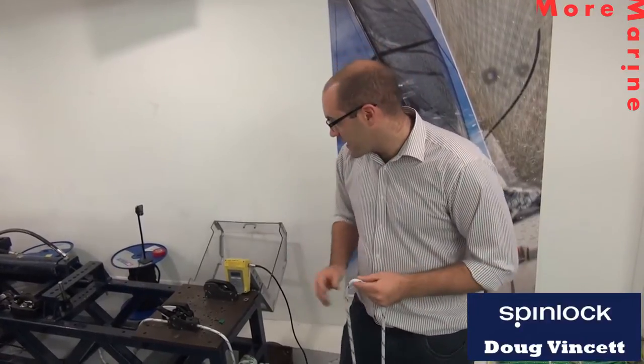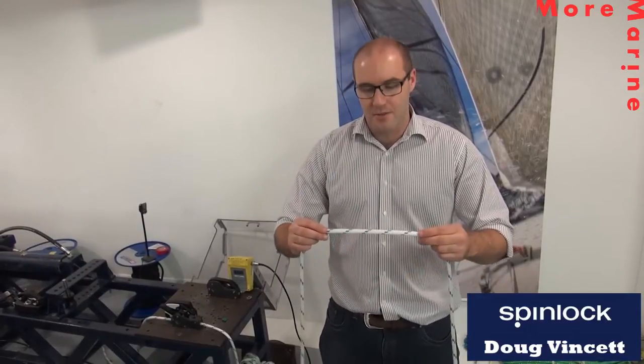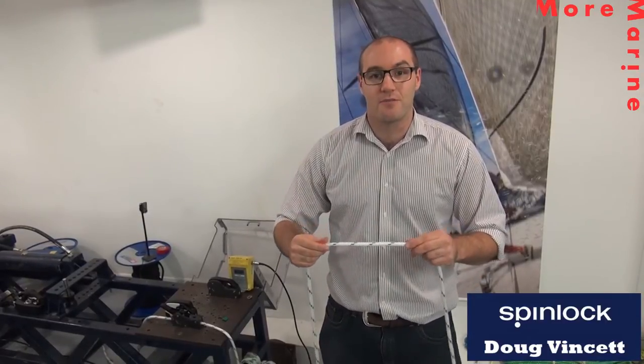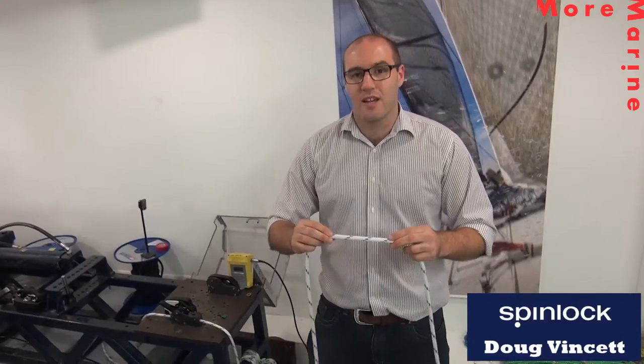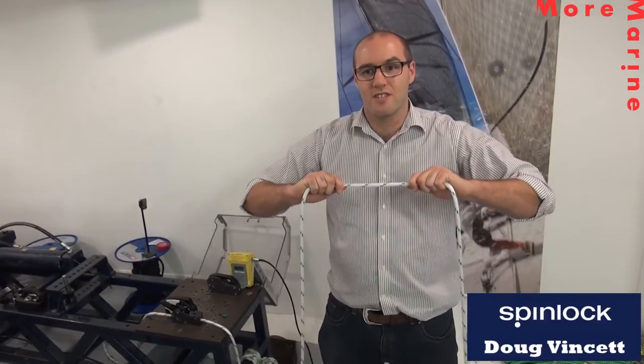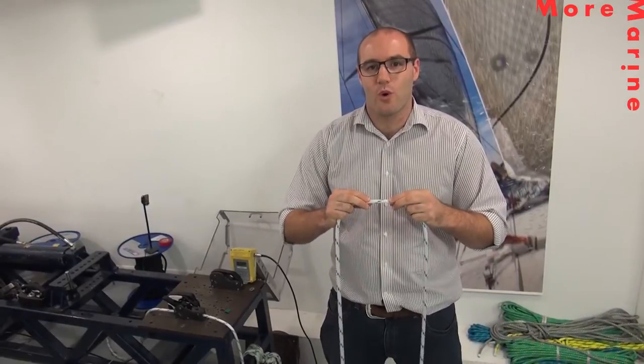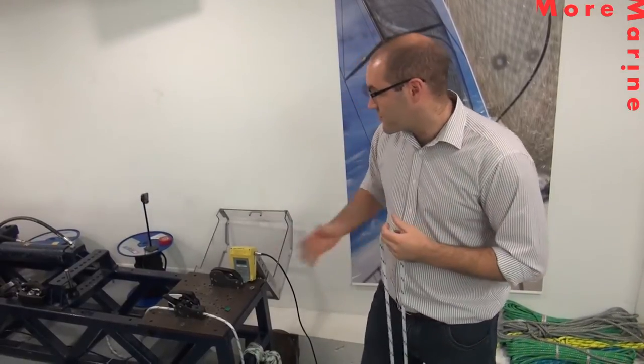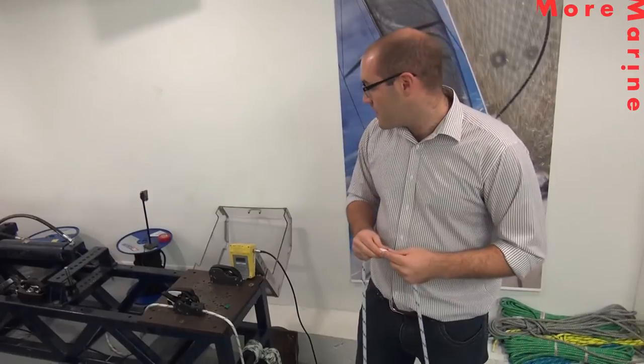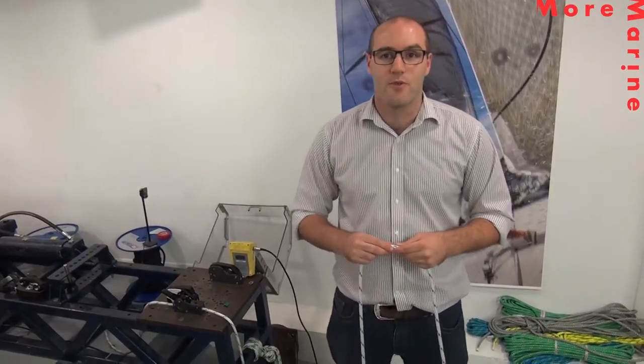Today in our XAS and XTS clutches we're going to be testing this 10mm braid on braid from English Braid. It's 100% polyester, it's pre-stretched and heat-stretched, it's 24-plait cover with a 12-plait core, and we're just going to put it in our test rig here down at Cowes and Spinlock and put some load in it and see how it performs in our clutches.